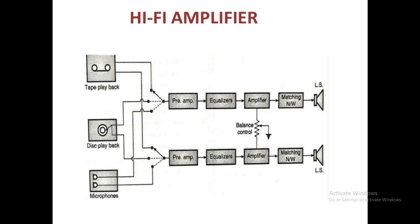The requirements of a Hi-Fi system are: signal-to-noise ratio greater than 50 dB, flat frequency response in the range of 14 Hz to 15 kHz, non-linear distortion less than 1%, dynamic range of 20 dB to 100 dB — if not, at least 80 dB — and stereophonic reproduction to give the sense of direction. Now we will look at the block diagram of the Hi-Fi system.